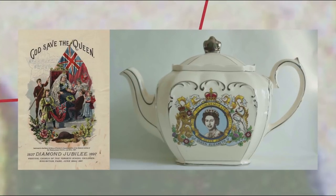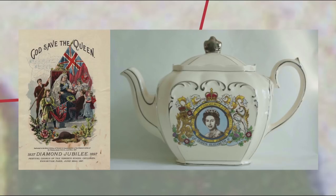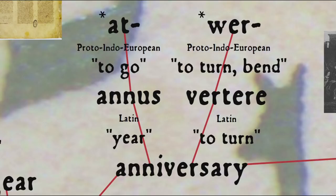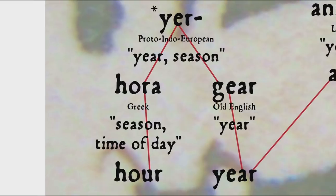The word Jubilee is now used in English to refer to a fiftieth anniversary, or sometimes other big anniversaries such as a silver jubilee for twenty-five years and a diamond jubilee for sixty years. As for the word anniversary, it comes from the Latin word for year, annus, ultimately from the Proto-Indo-European root *at, 'to go,' indicating the idea of a period of time gone through, and the word vertere, 'to turn.' The English word year comes from Old English gear, ultimately from the Proto-Indo-European root *yer meaning 'year or season,' which also came into Greek as hora, 'season,' eventually finding its way into English in the words horoscope and hour.